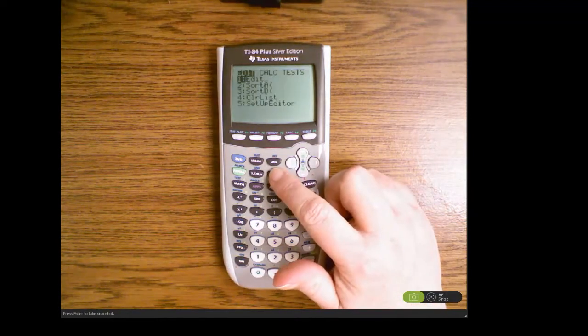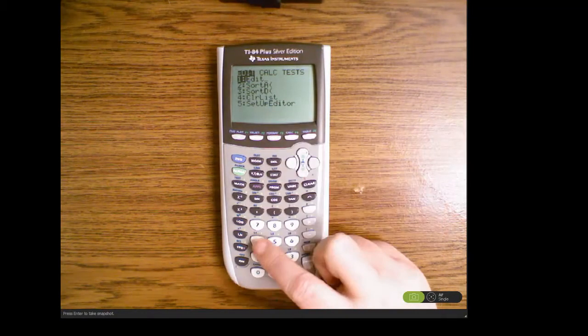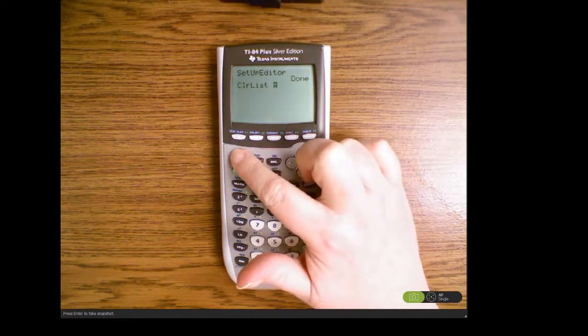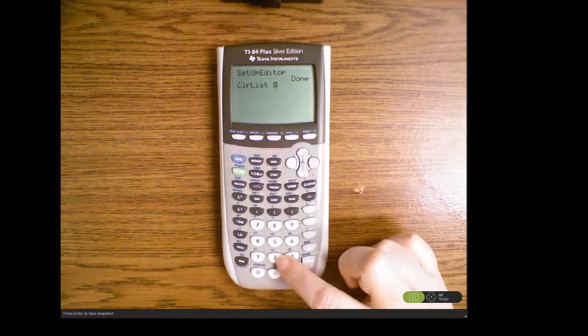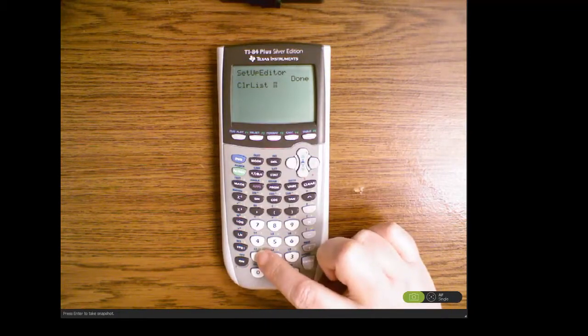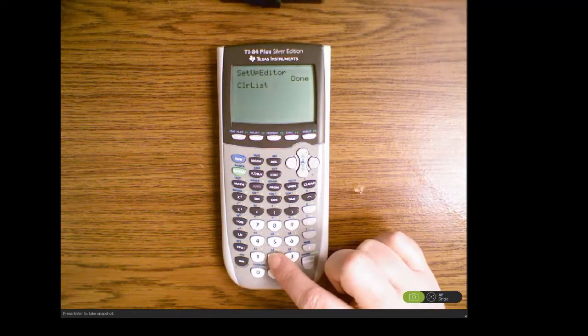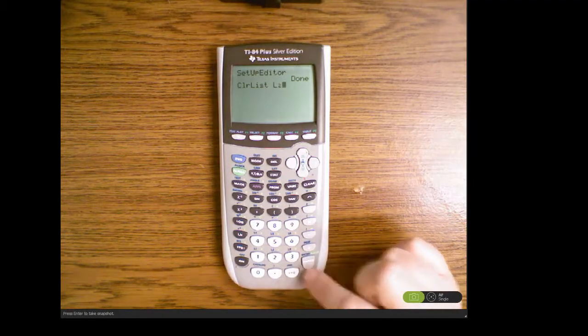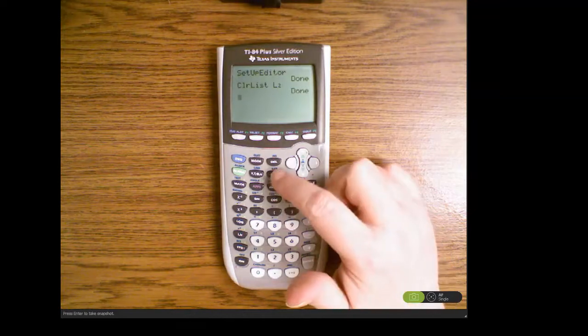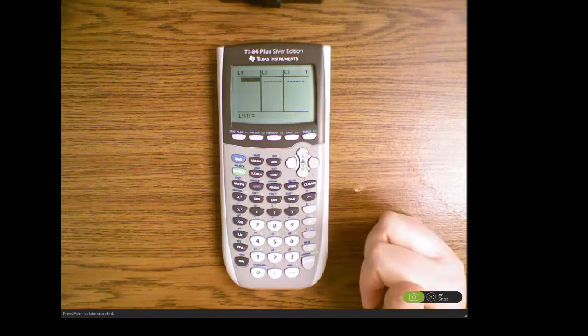Another way to clear list is to press STAT and number four clear list, then tell it which list to clear. I'm going to hit the second key to get the blue numbers above my primary keys and then L2 to clear list 2. Then go back to STAT and EDIT and now I have clear lists.